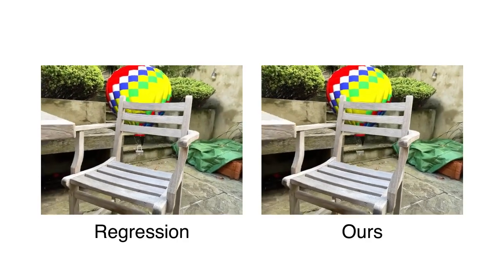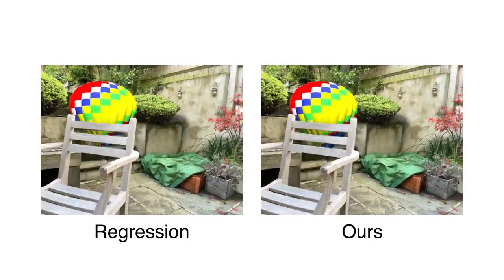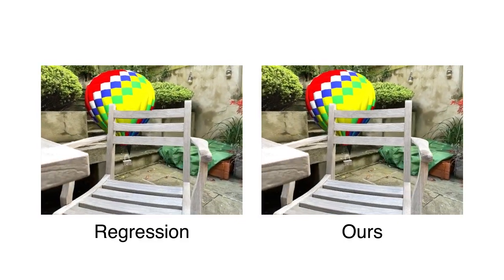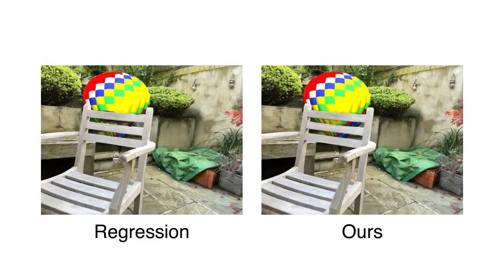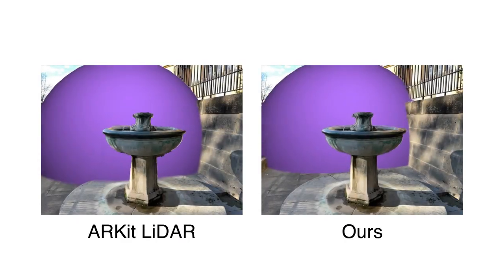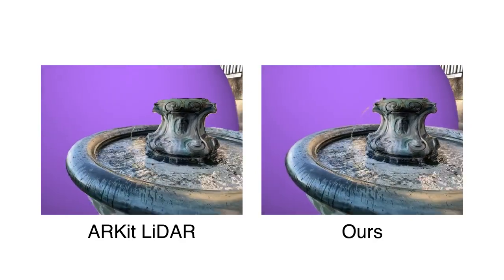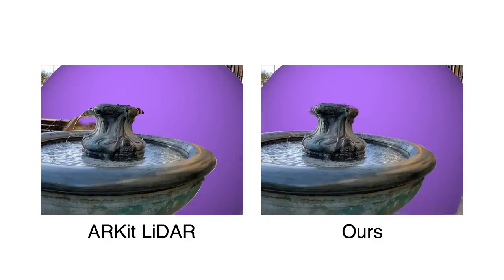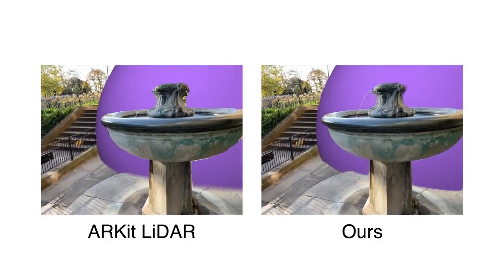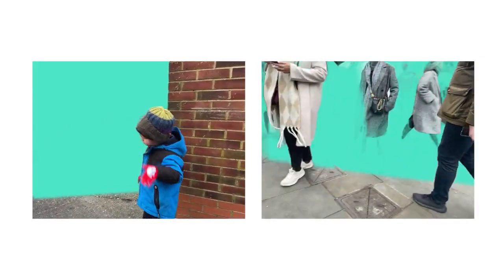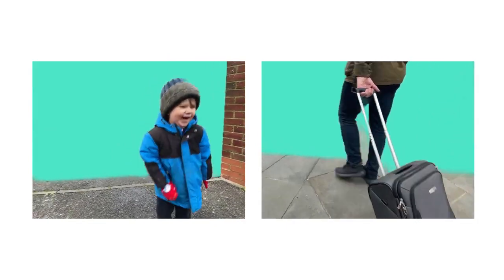On the right, we show our method. Notice that ours is far more stable and is able to correctly occlude the balloon frame to frame, even with rapid camera movements. We also compare our method to occlusions obtained via an ARKit LiDAR sensor — ARKit LiDAR on the left, our method on the right. Notice that ours is far more stable, especially around the edges of the fountain. Surprisingly, our method performs well on moving objects, even though it has only been trained on static scenes.